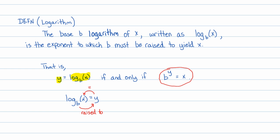Briefly recall that a logarithm is just an exponent, really. The log base b of x is equal to y, if and only if b to the y is equal to x. I call that my circular argument. Essentially, log base b of x equals y is the same thing as saying b raised to the y power is equal to x.